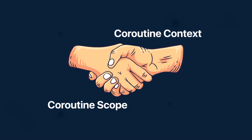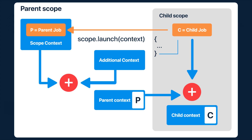When a coroutine is launched inside the coroutine scope of another coroutine, it inherits its context, and the job of the new coroutine becomes a child job of the parent coroutine. When the parent coroutine is cancelled, all its children are cancelled as well, and the parent coroutine always waits for completion of all its children by default.